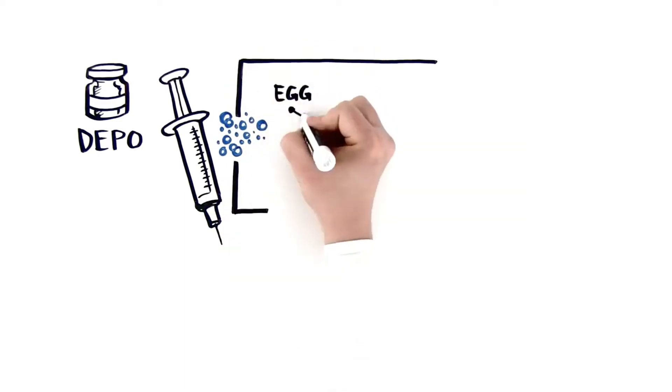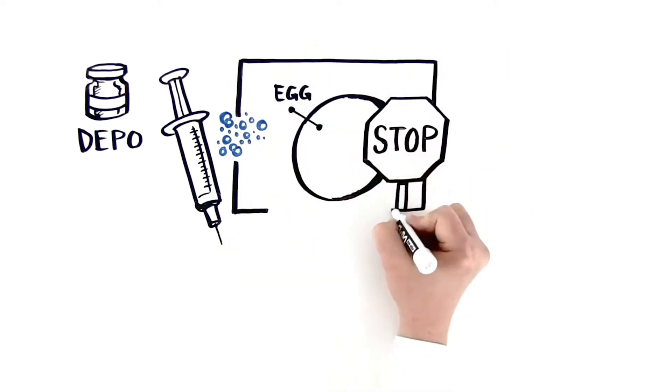It uses a hormone to prevent your ovaries from releasing eggs and also helps your body block sperm.